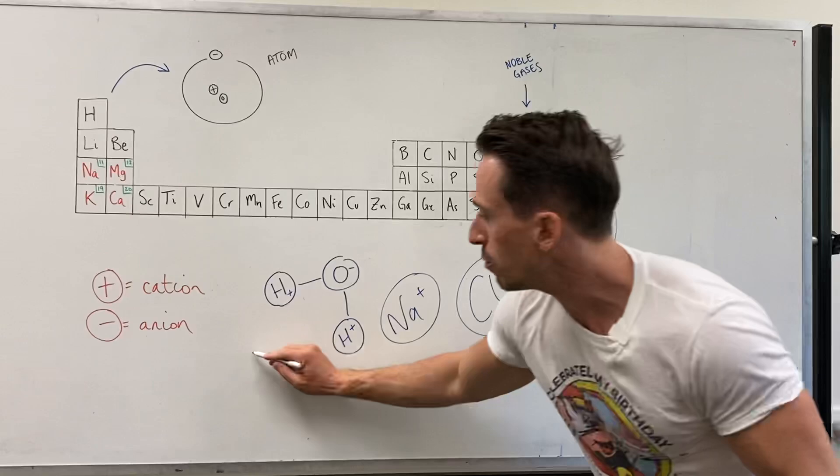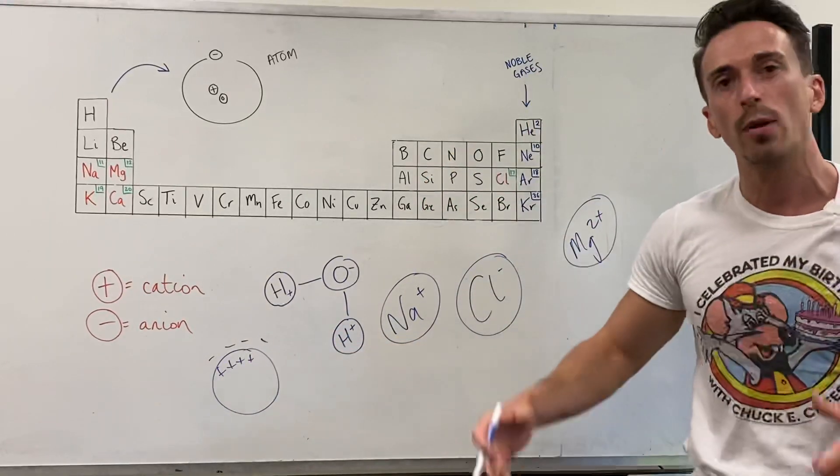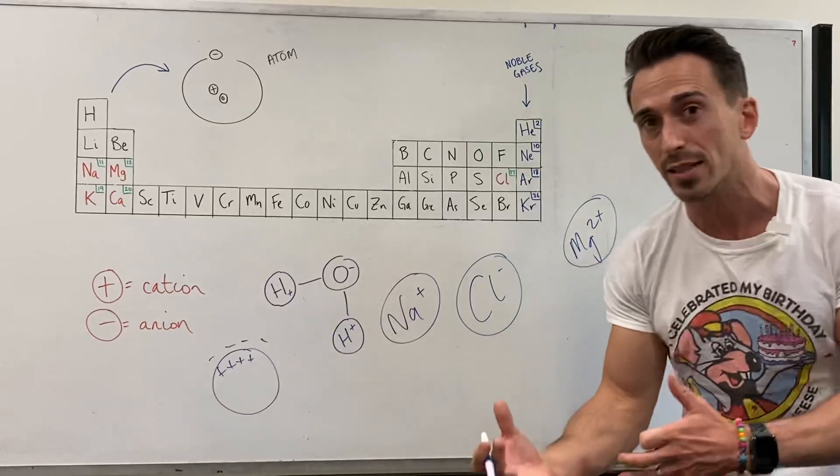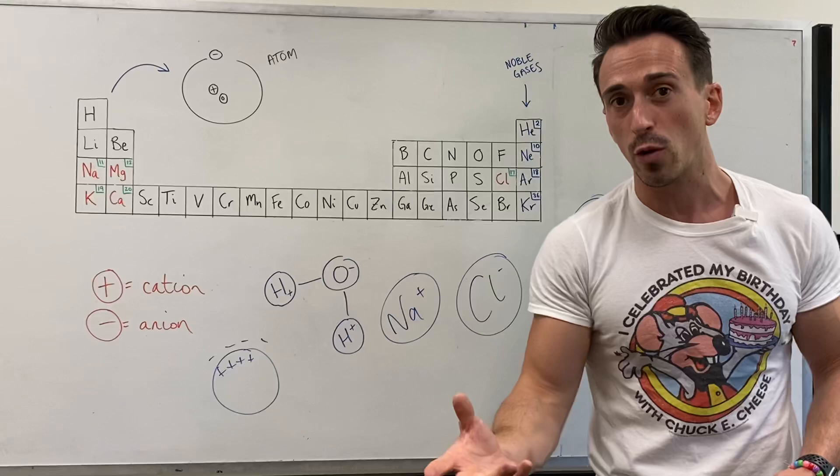Two, we can accumulate these charges inside of a cell and outside of a cell and create what we call an electrical chemical gradient, also known as a resting membrane potential, which then allows for muscles to contract and neurons to fire off.